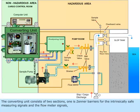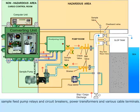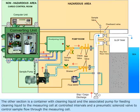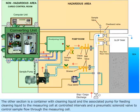The converting unit consists of two sections. One is Zener Barriers for the intrinsically safe measuring signals and the flow meter signals, sample feed pump relays and circuit breakers, power transformers and various cable terminals. The other section is a container with cleaning liquid and the associated pump for feeding cleaning liquid to the measuring cell at controlled intervals, and a pneumatic solenoid valve to control sample flow through the measuring cell.